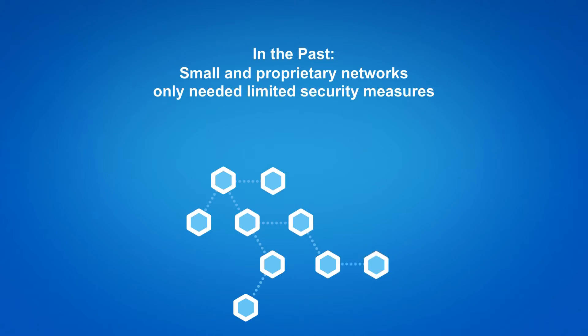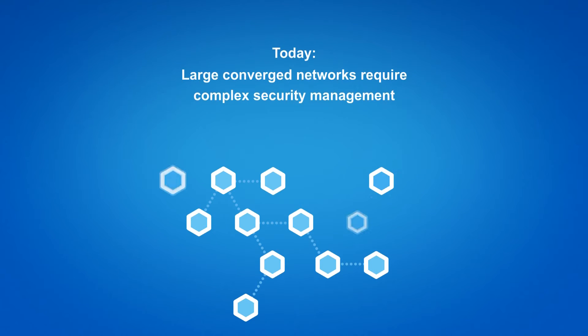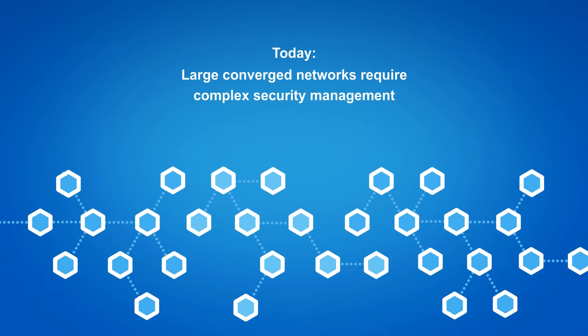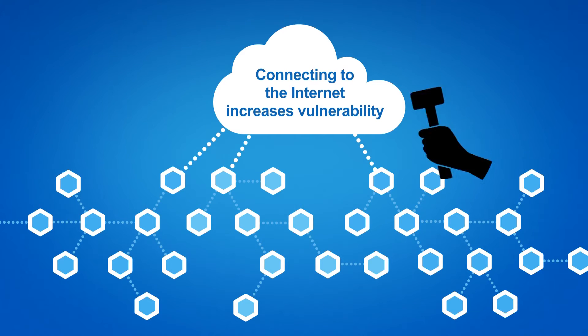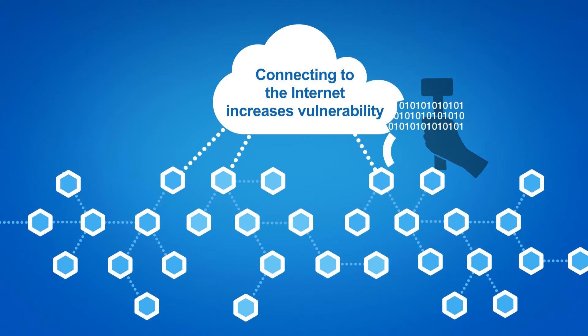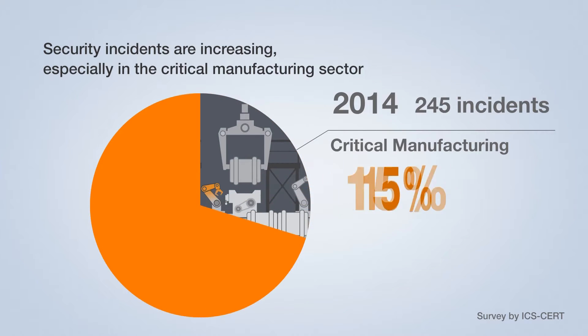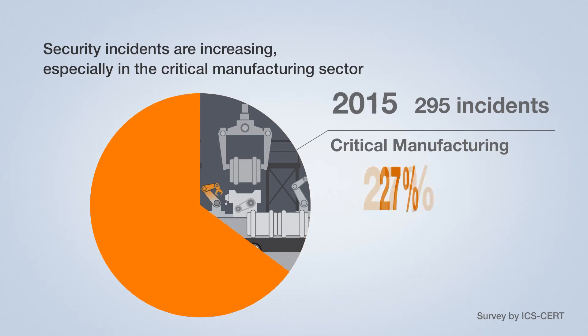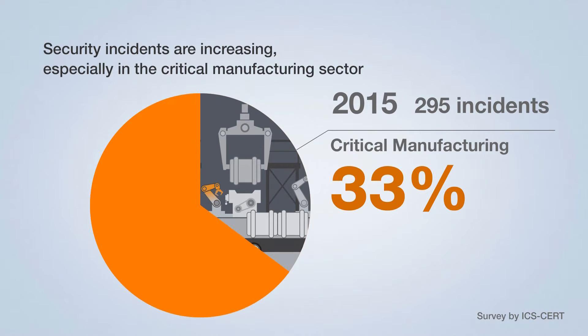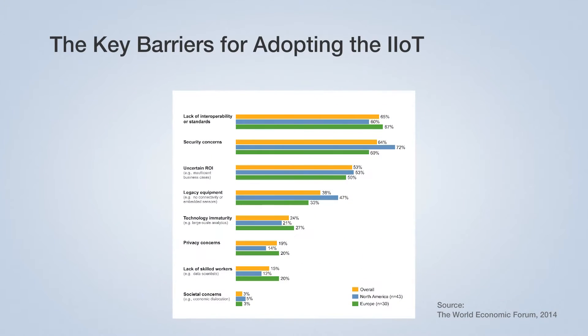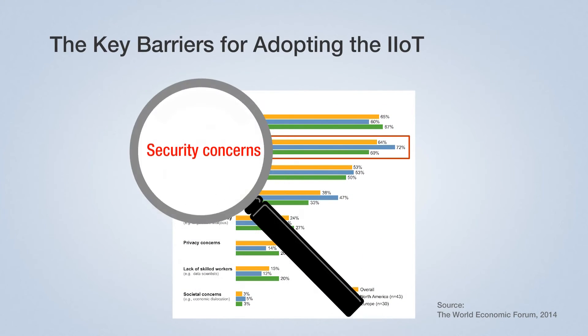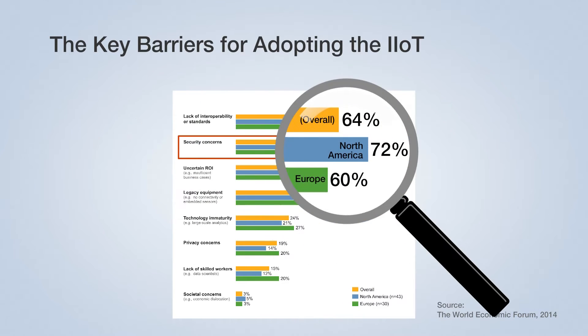Previously, networks were small and only required limited security measures. As the IIoT trend connects more devices to the internet, operators must consider network vulnerabilities. An ICS-CERT report showed that security incidents are increasing, especially in the critical manufacturing sector, which had 33% of the total in 2015. Security has become such a concern that some businesses are hesitant about embracing the IIoT.